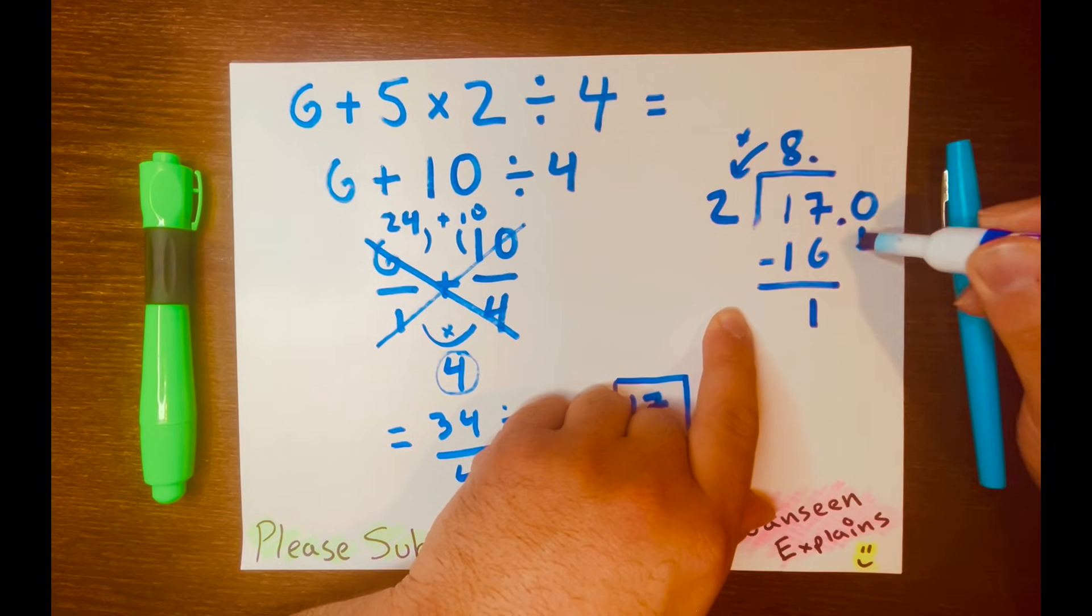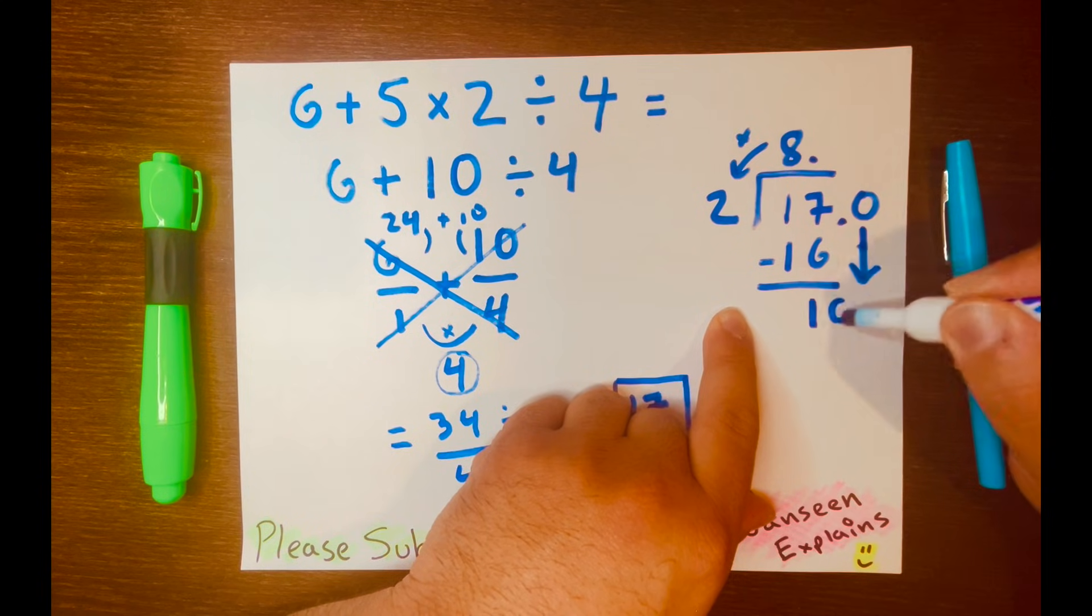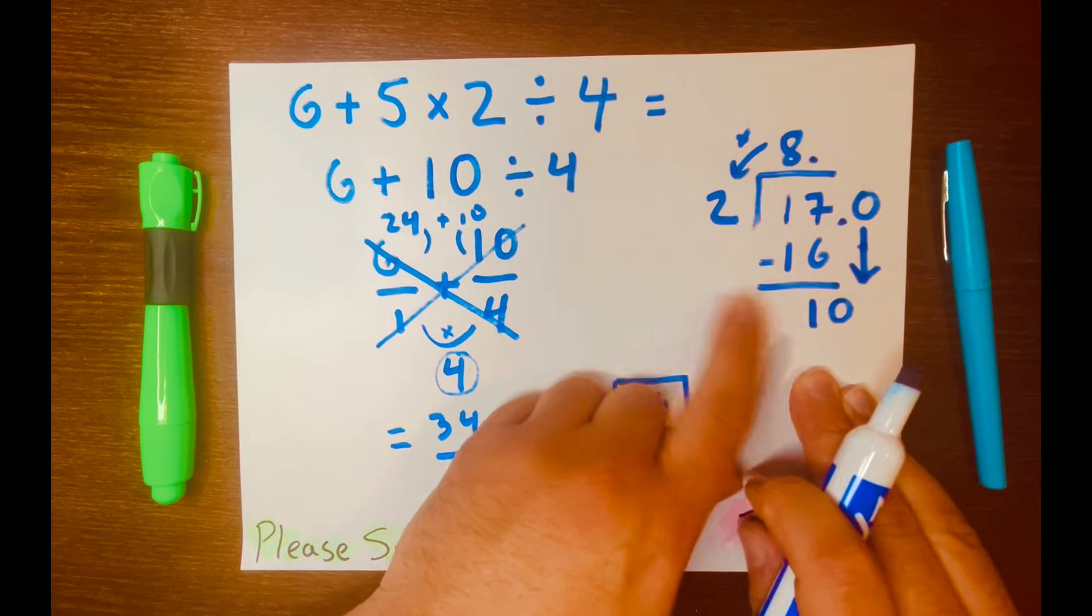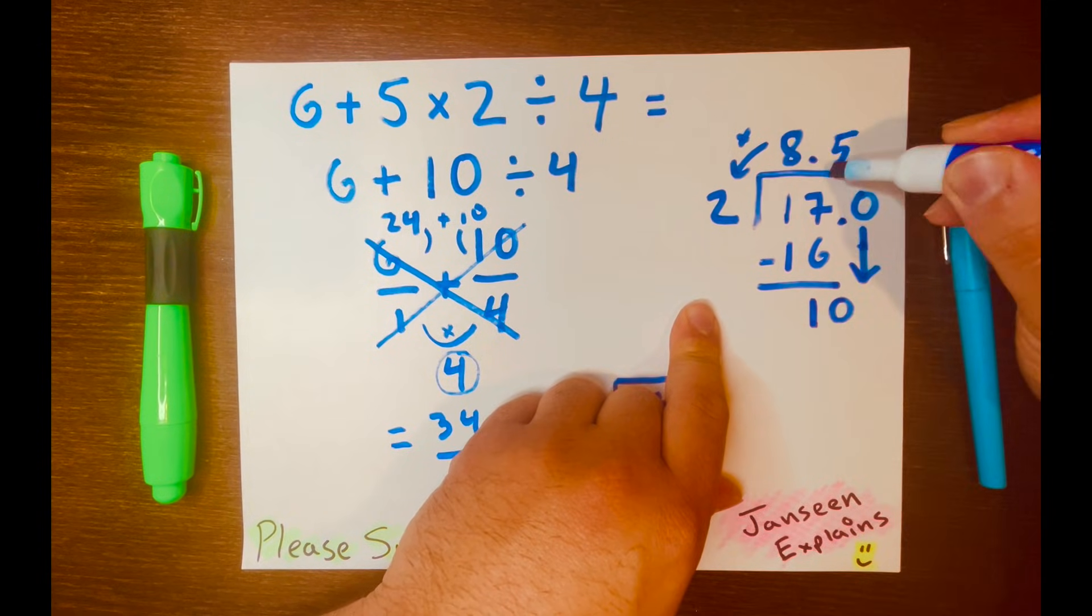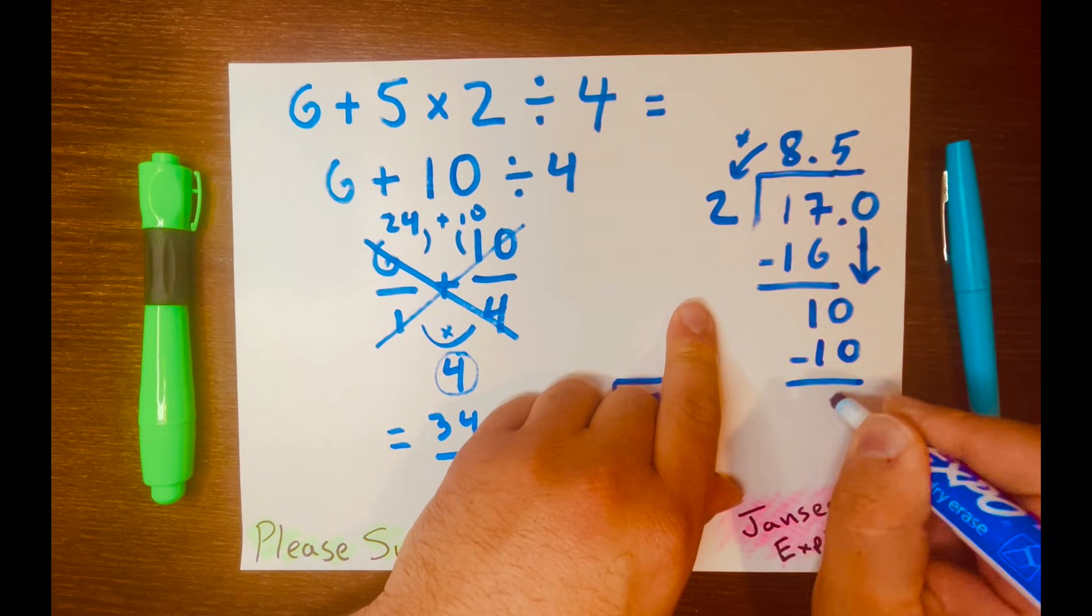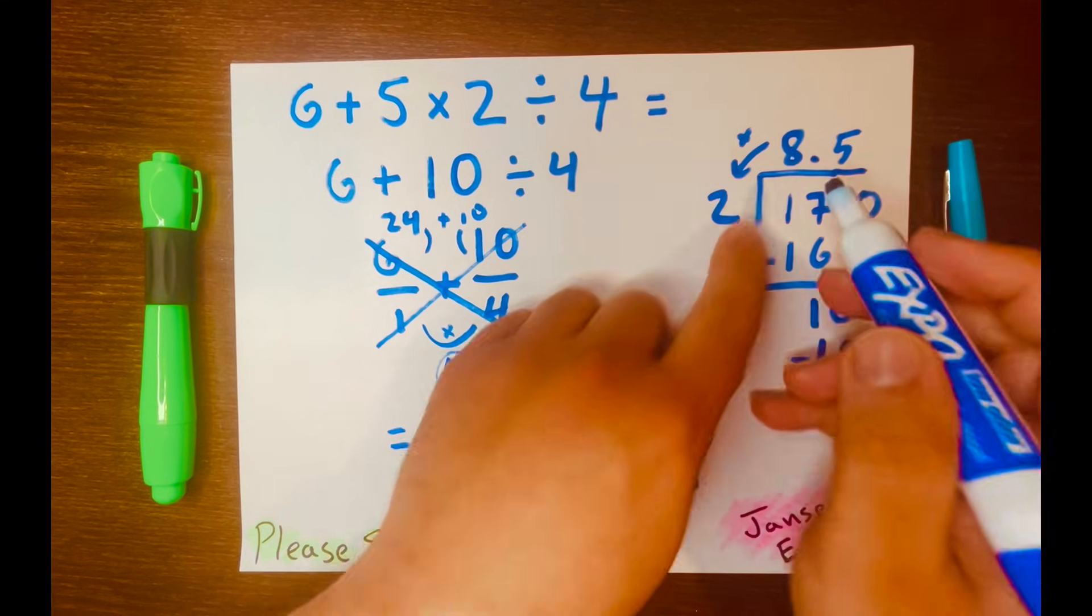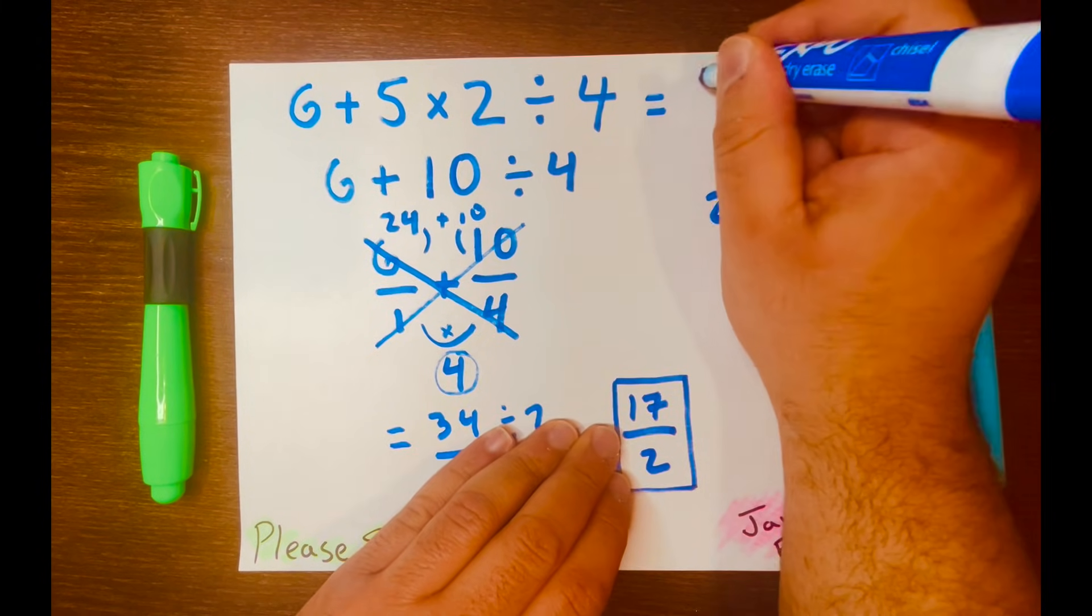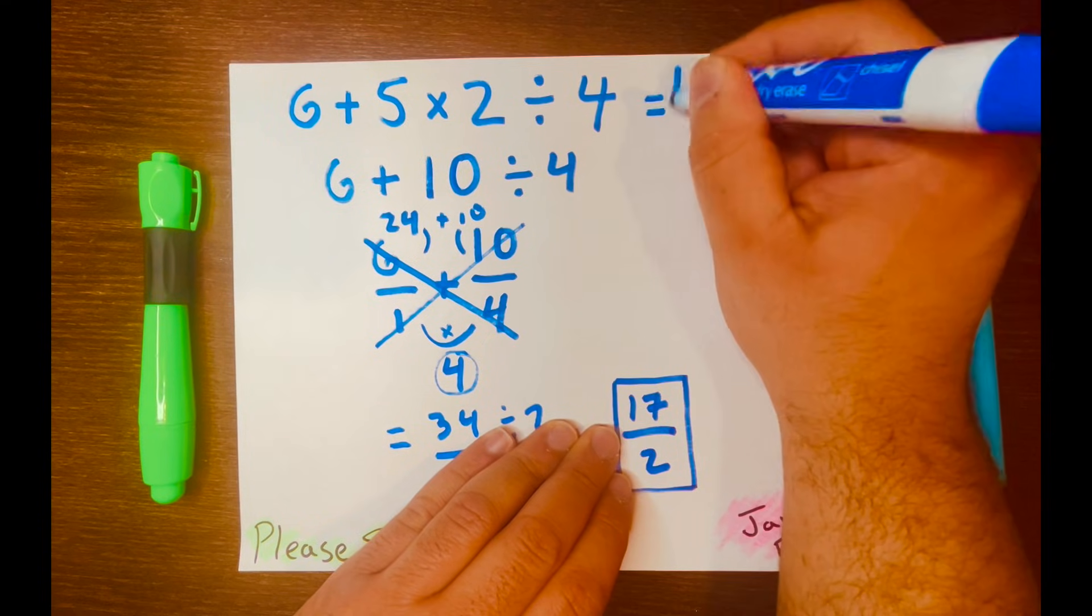And then give the 0 to the 1, and the 1 becomes 10. How many times can 2 fit into 10? 5 times. So I'll write the 5 up there, and 5 times 2 is 10. So 10 minus 10 is 0. So your decimal answer is 8.5, so I'll write it here: 8.5.